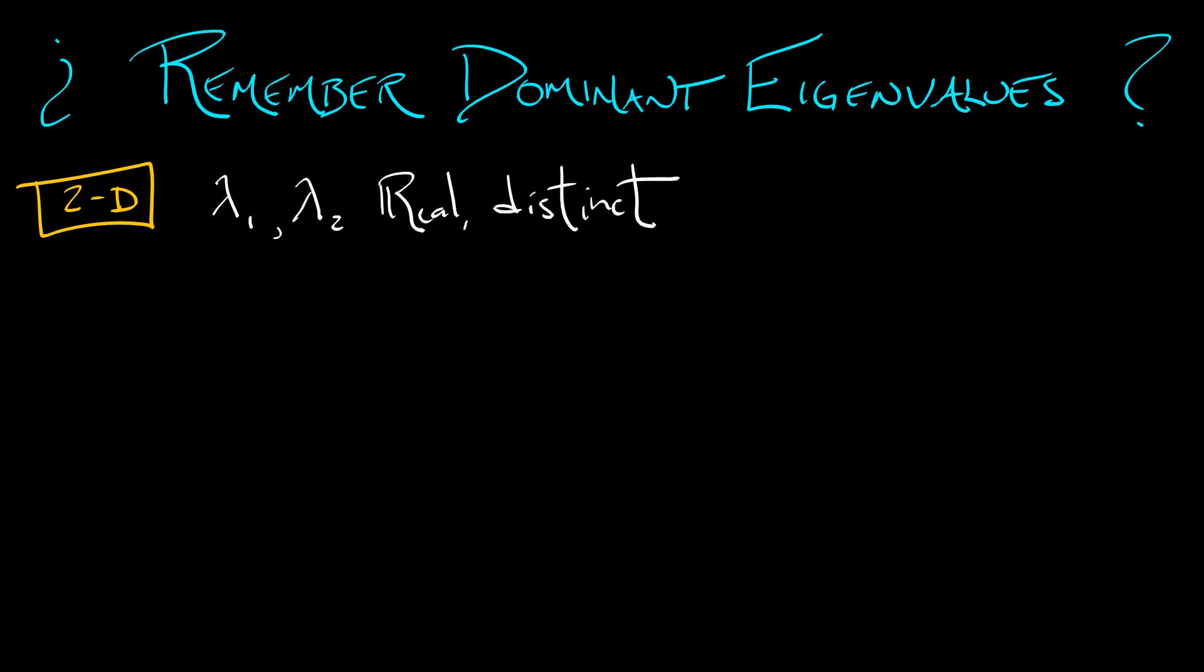then we said that in continuous time, lambda 1 dominates lambda 2 if it is bigger than lambda 2. If it's strictly bigger than lambda 2, it's the dominant eigenvalue.